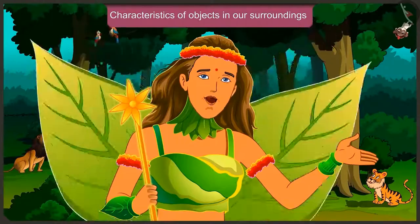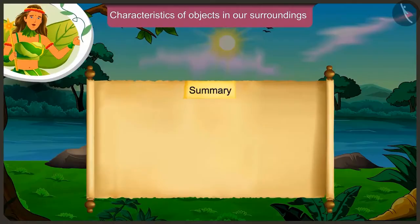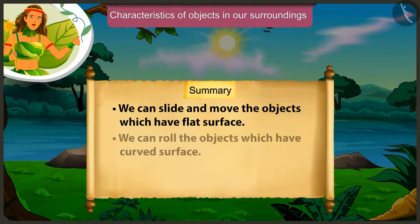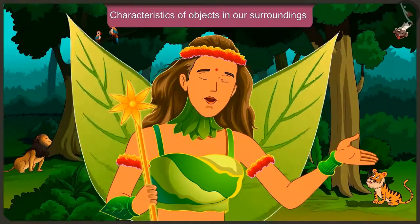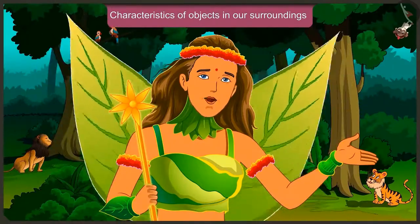Friends, today we understood some interesting facts about the characteristics of objects around us. For example, we can slide the objects with a flat surface. We can roll the objects with a round surface. And that we can roll and slide objects with a cylindrical surface. You too along with your friends can learn about some more such objects with flat surface and curved surface.